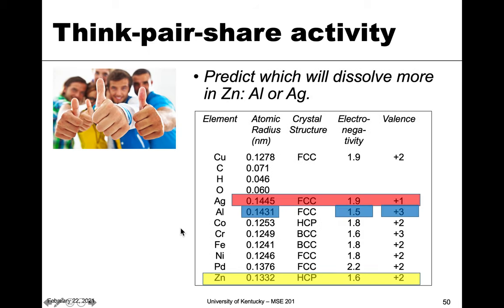The second Hume-Rothery rule is similar electronegativities. Zinc has an electronegativity of 1.6, silver is 1.9, and aluminum is 1.6. So aluminum is closer in electronegativity and size as well — aluminum is better on both of those criteria so far.